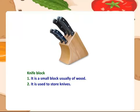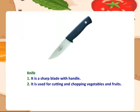Knife block — it is a small block, usually of wood. It is used to store knives. Knife — it is a sharp blade with a handle. It is used for cutting and chopping vegetables and fruits.